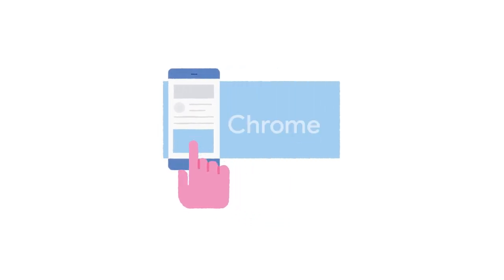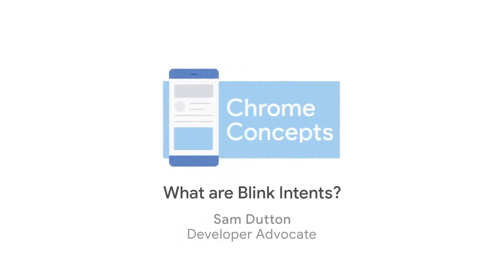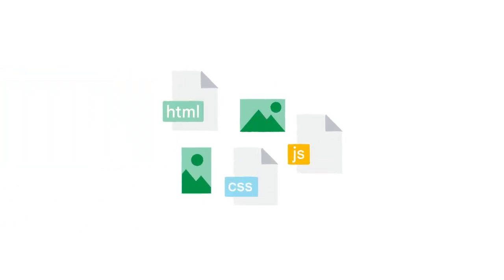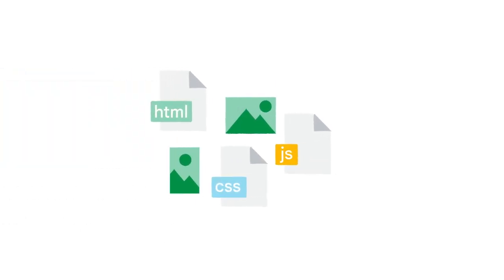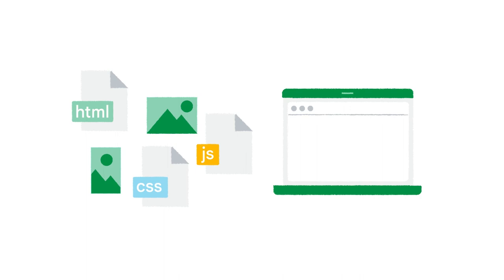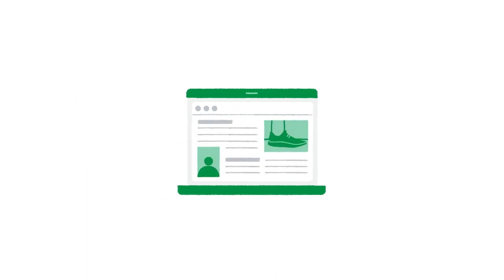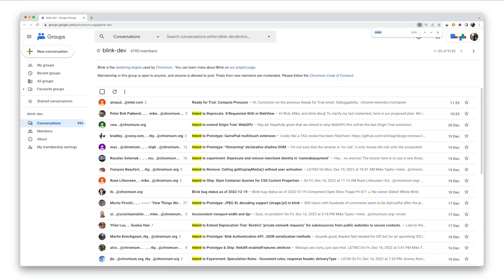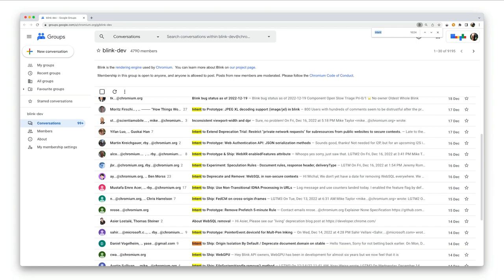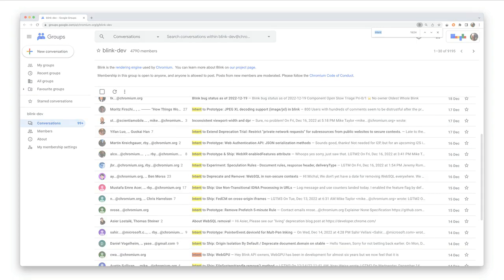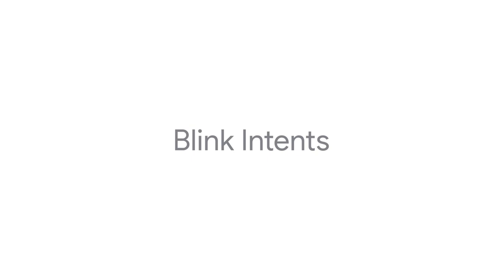The Chrome web browser uses the Blink rendering engine to transform code and resources into a web page that you can view and interact with. When engineers want to make a change to Blink, they post on the Blink Dev mailing list to get approval to proceed. These posts are called Blink Intents.